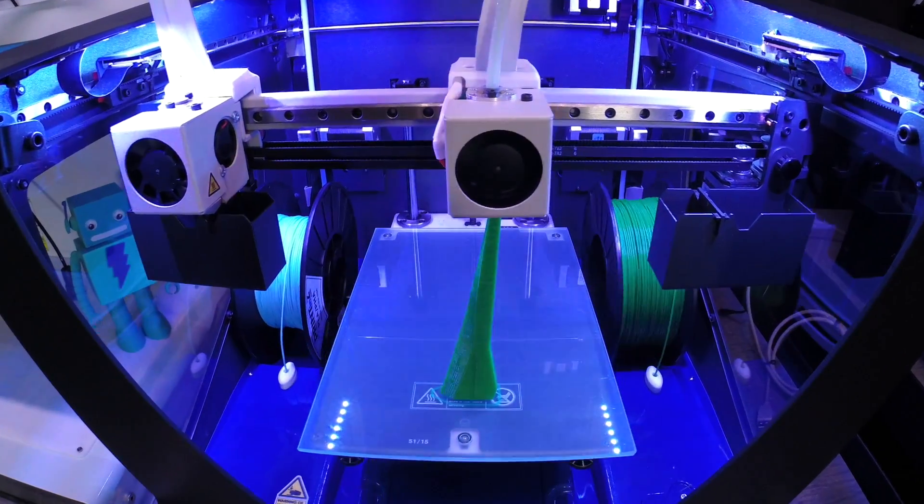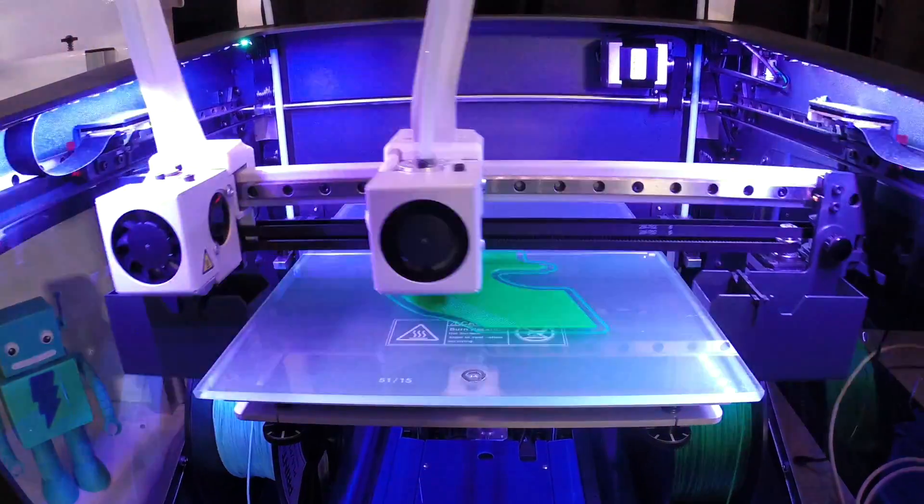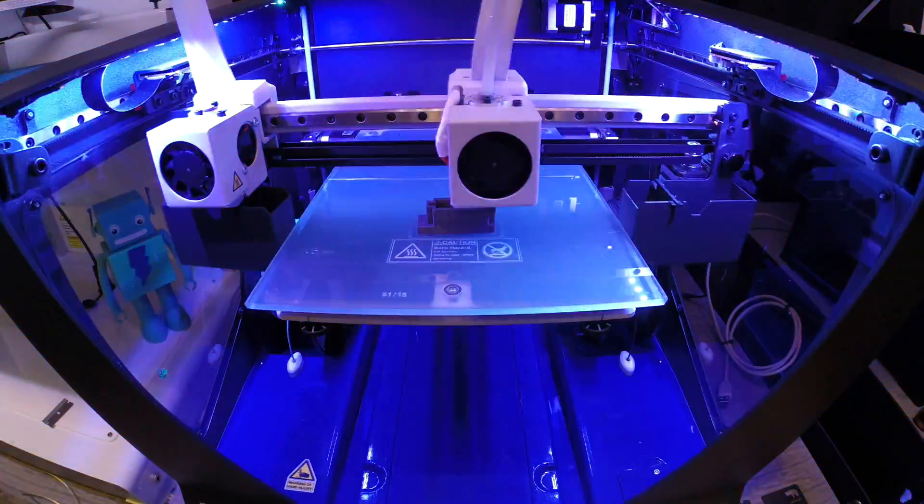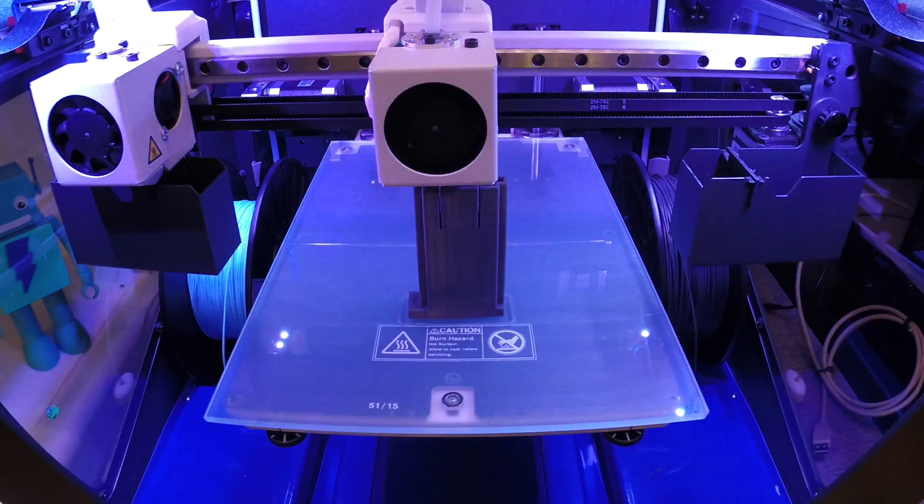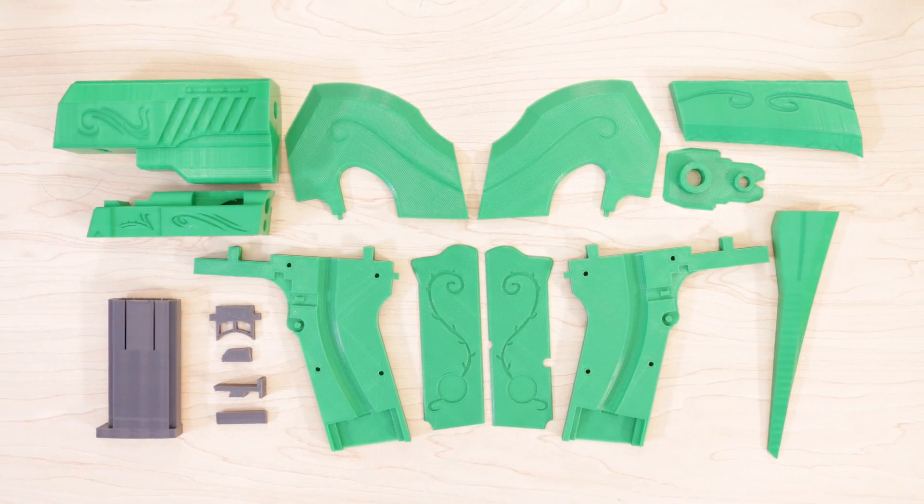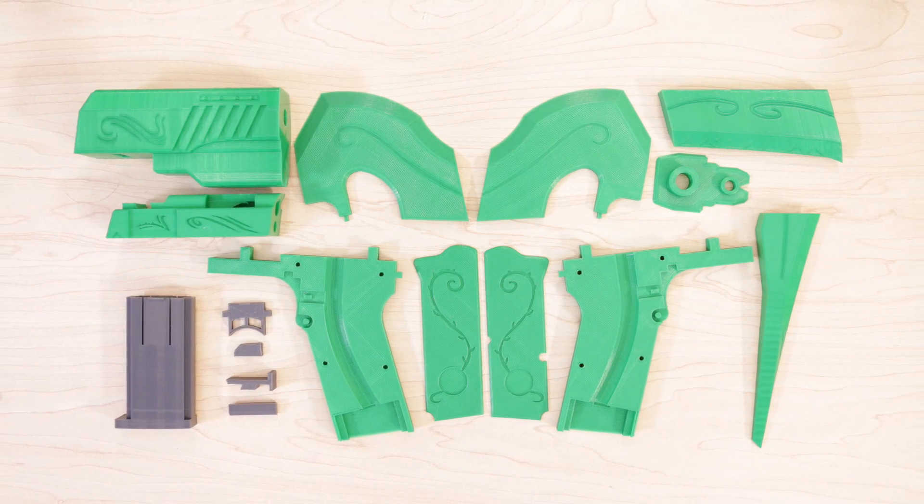It's also worth noting that I used 1.75 filament, which works really well in the Sigma 3D printer, even though it's only supposed to run 2.85 filament. So here's all of the pieces. I didn't do any post-processing, but you definitely could sand them down if you want a really smooth finish.